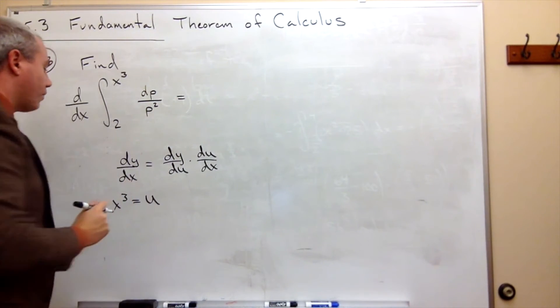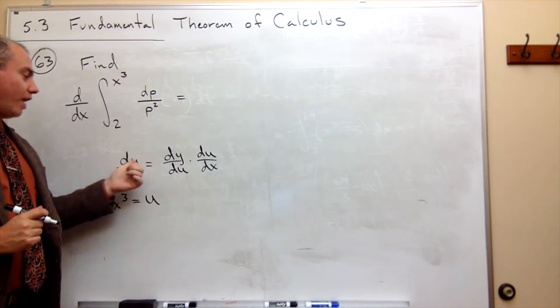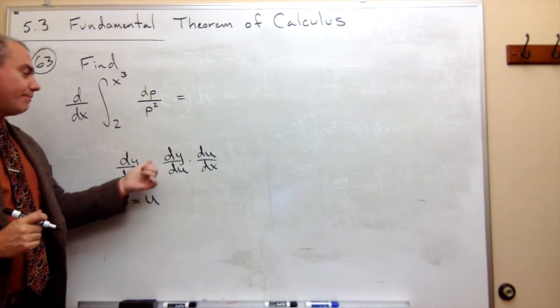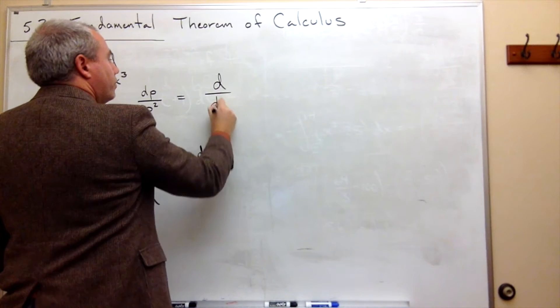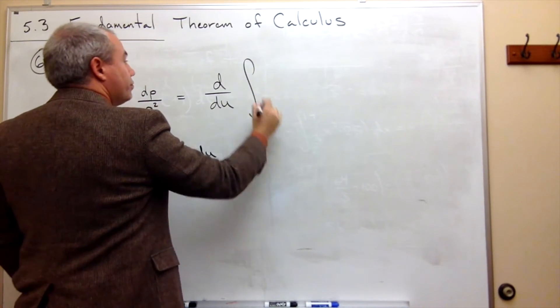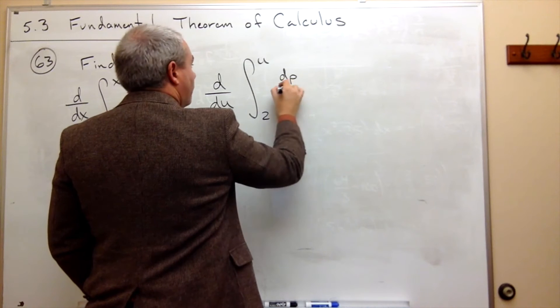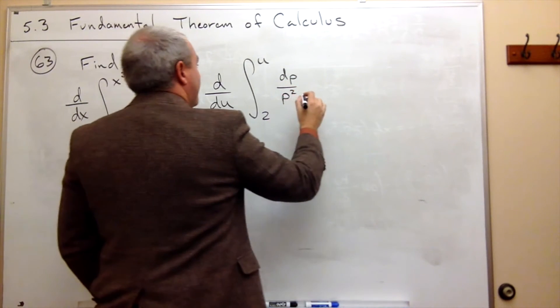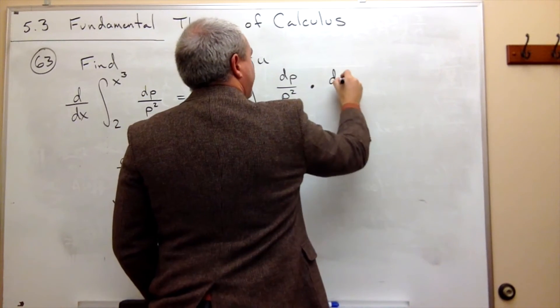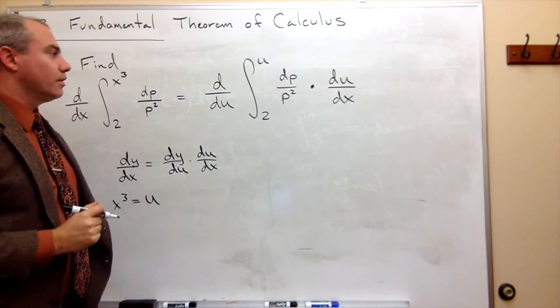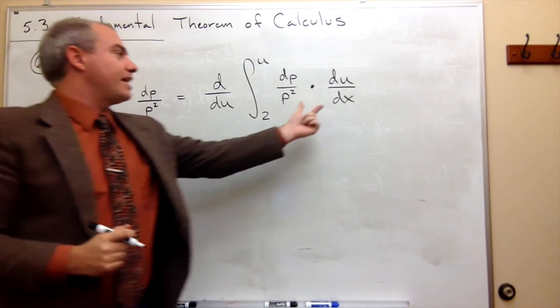I'm going to let x cubed be u, and then I'm going to rewrite this thing. So what I want is I want to take the derivative of this guy with respect to x. But I said that the derivative of that guy with respect to x is the same thing as the derivative of that guy with respect to u. In other words, it's the same as the derivative with respect to u of integral of 2 to u of dp over p squared. But then I need to multiply by the derivative of u with respect to x. But now this is in the perfect form to use the fundamental theorem.